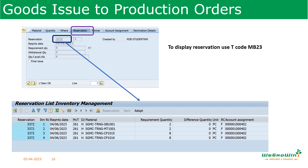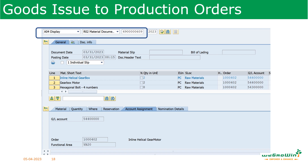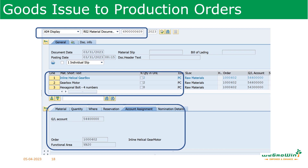Here we see reservation 3372 — production order 100402 is displayed with the components reserved for the production order. In the account assignment tab, we see production order number 100402 for which materials are issued. With all details confirmed, we check and save. The goods issue is posted to the production order and the material document is created. To display the document, use MIGO with the material document number — for example, document 4900000609 — to see components, quantity, where they were issued from, and the account assignment.